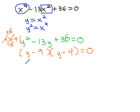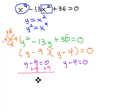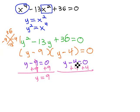We can solve by setting each factor equal to 0: y minus 9 equals 0, and y minus 4 equals 0. Solving by adding 9 to both sides gives y equals 9, and adding 4 to both sides gives y equals 4.